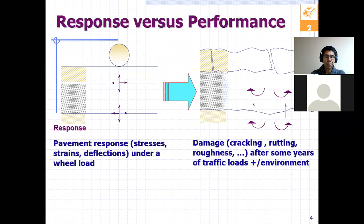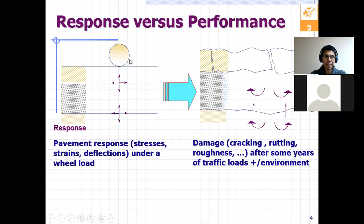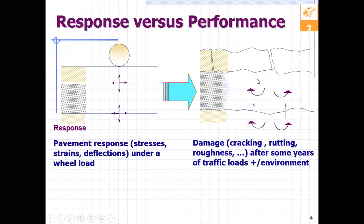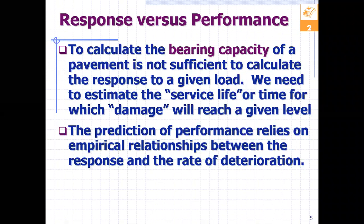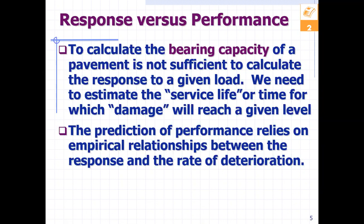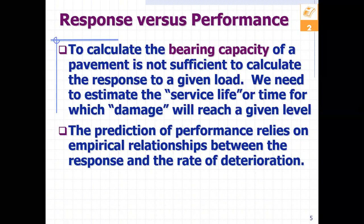What is the concept of pavement failure and service life? Whenever you have the tire of a vehicle — a goods vehicle, freight, tractor-trailer — transferring its load, the pavement will experience certain responses: stresses and deflections. When that happens, the pavement will suffer damage over the years from traffic and environmental loads. To calculate bearing capacity, it is not sufficient to calculate the instantaneous response; we need to estimate the service life — the amount of time until a certain degree of damage happens.